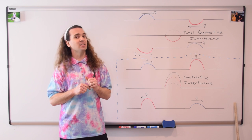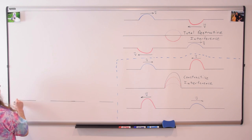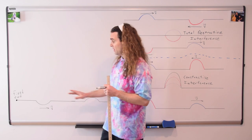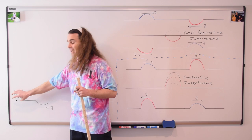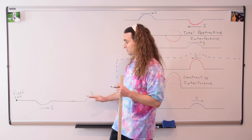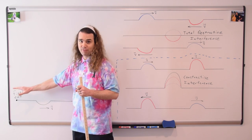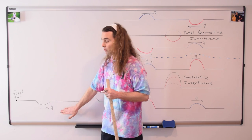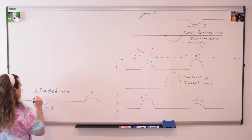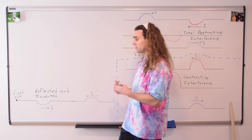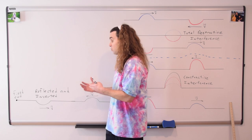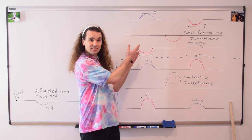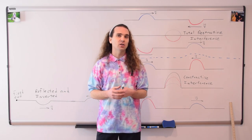Now let's talk about standing waves. What I've drawn here is a rope that is fixed at one end — that end is stationary. Wave pulses sent down the rope will be reflected and inverted, meaning they come back and switch sides. If I continue to send wave pulses down the rope, those pulses will interfere with the reflected and inverted pulses, both constructively and destructively, to create what are called standing waves.